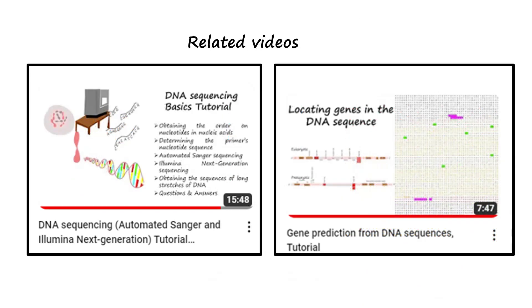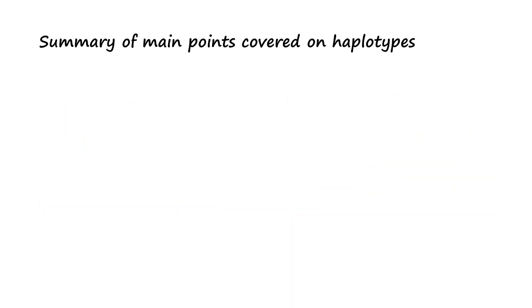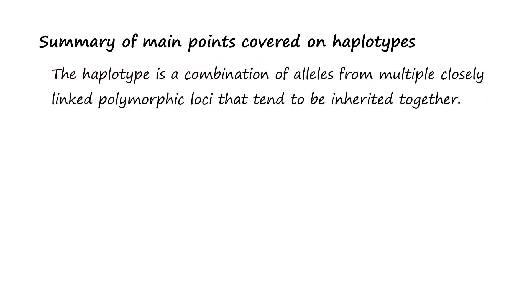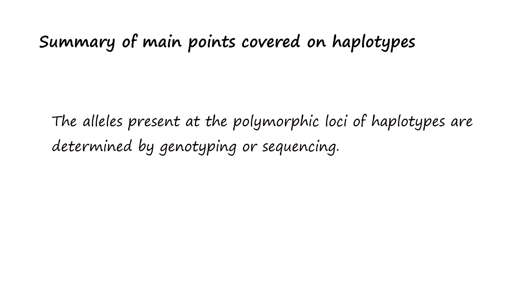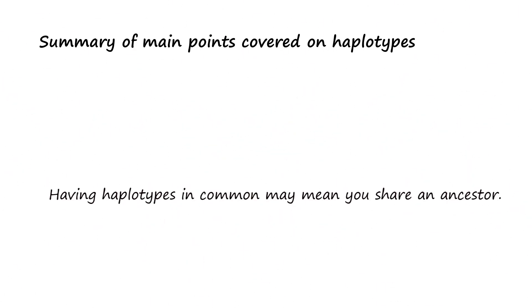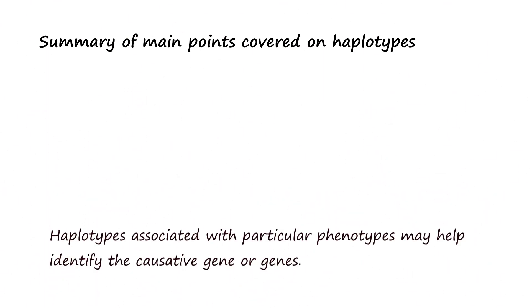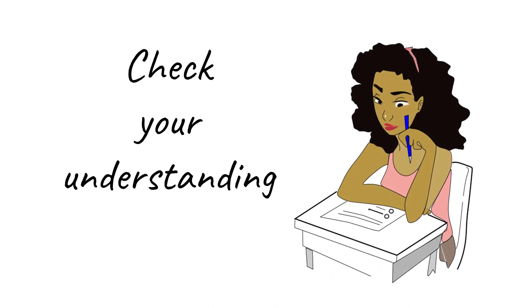This video covers the concept of haplotypes and the main points are: 1. The haplotype is a combination of alleles from multiple closely linked polymorphic loci that tend to be inherited together. 2. The alleles of the polymorphic loci found in haplotypes are determined by genotyping or sequencing. 3. Having haplotypes in common may mean you share an ancestor. 4. Haplotypes associated with a particular phenotype may help identify the causative gene or genes.